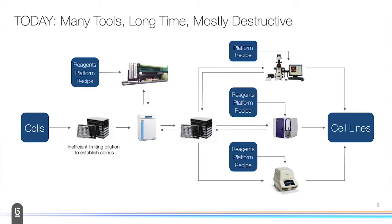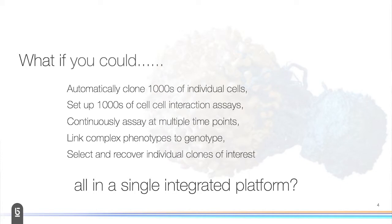If you want to do things like this today, you're usually going through many different tools, taking a long time, and mostly using destructive assays to do these measurements. So you're not able to recover those cells alive at the end. Really where Berkeley Lights' technology is positioned is to enable you to automatically clone thousands of individual cells.